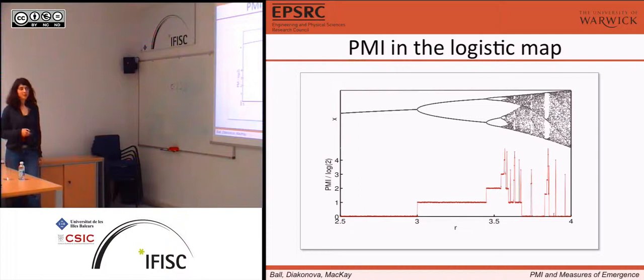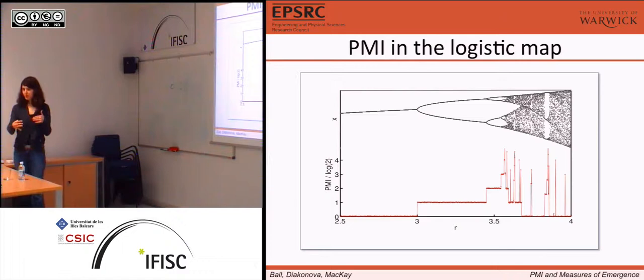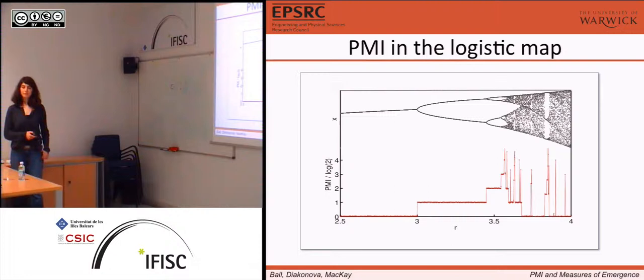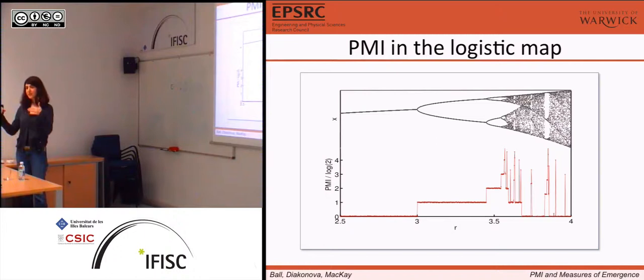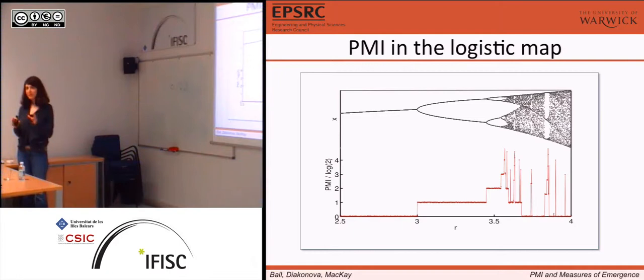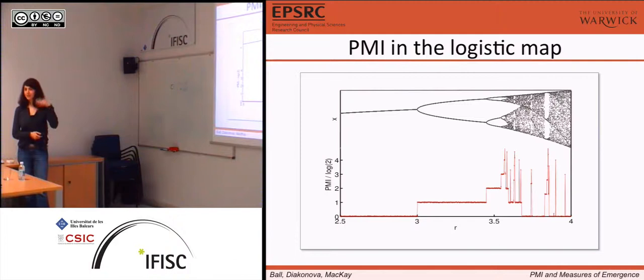At the period doubling accumulation point, PMI will go to infinity, but our parameter resolution isn't big enough. All these parts would consist of peaks if only we zoom in. If you have period four, then there are four choices of phase — depending on where you start in the initial configuration space, at time t you will be in either of the four points. So we measure how much choice there is. We don't measure the relative size of the basins of attractions for different phases; that would be a different thing.